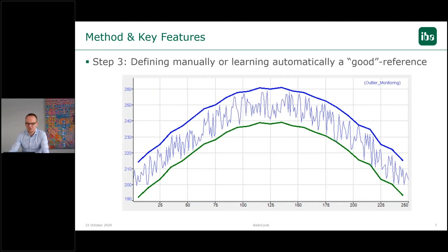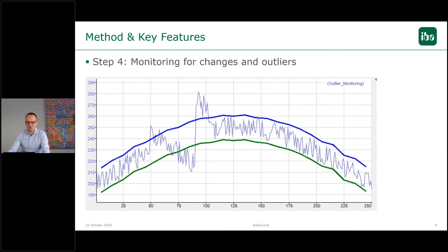We have to define a reference of how our cycle should look like, and based on this we can generate an upper and lower border or threshold where we want our process to be inside these borders. When we have configured this good reference, we can start monitoring the cycle.